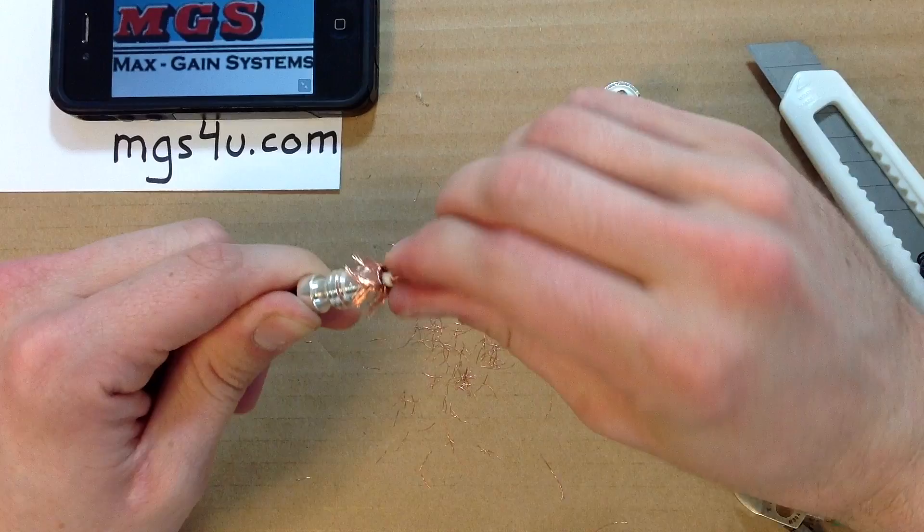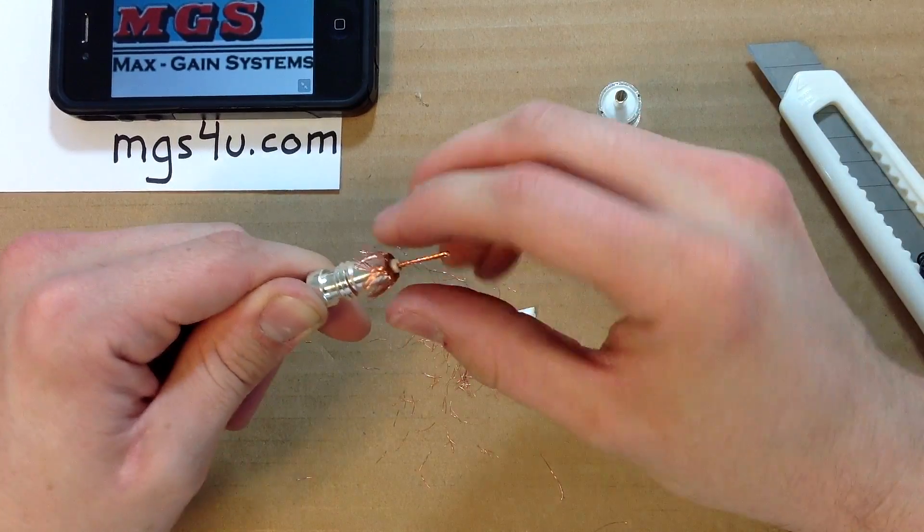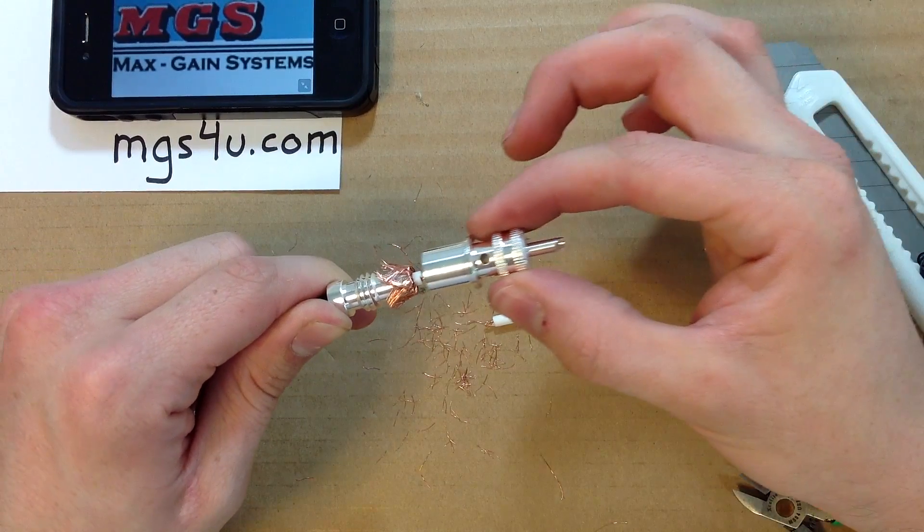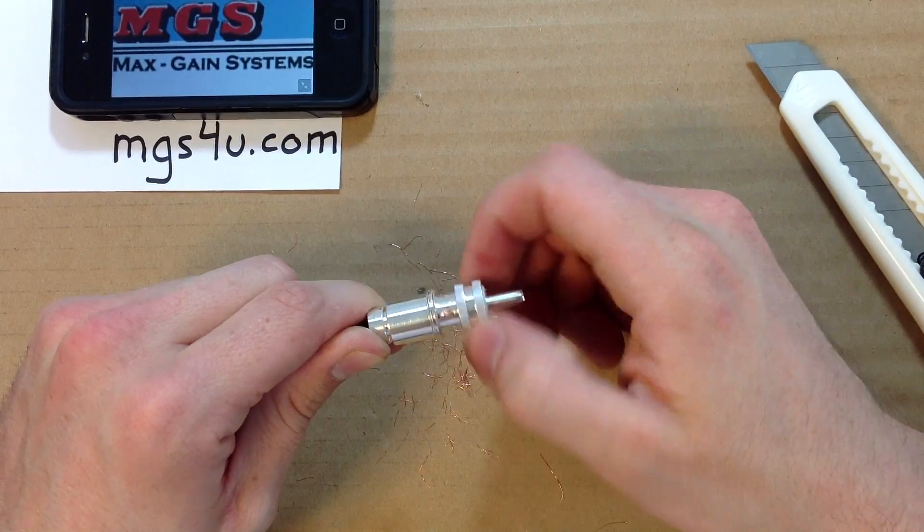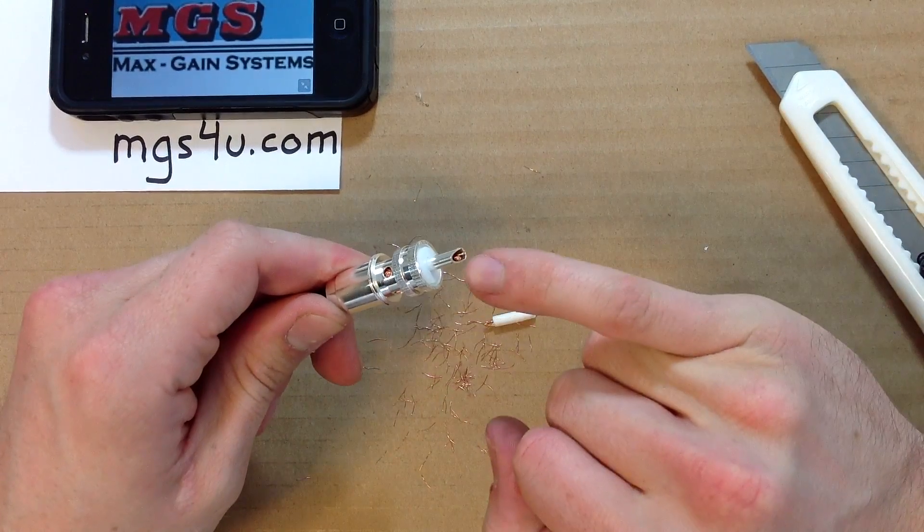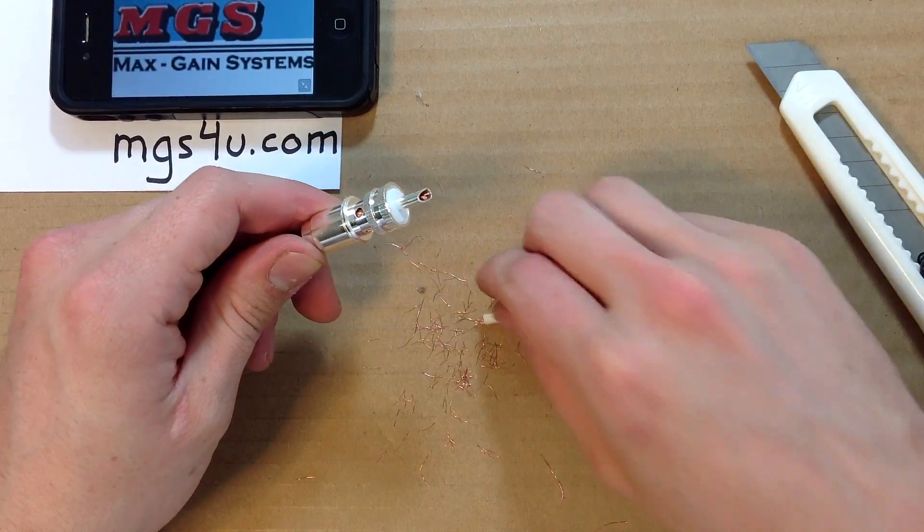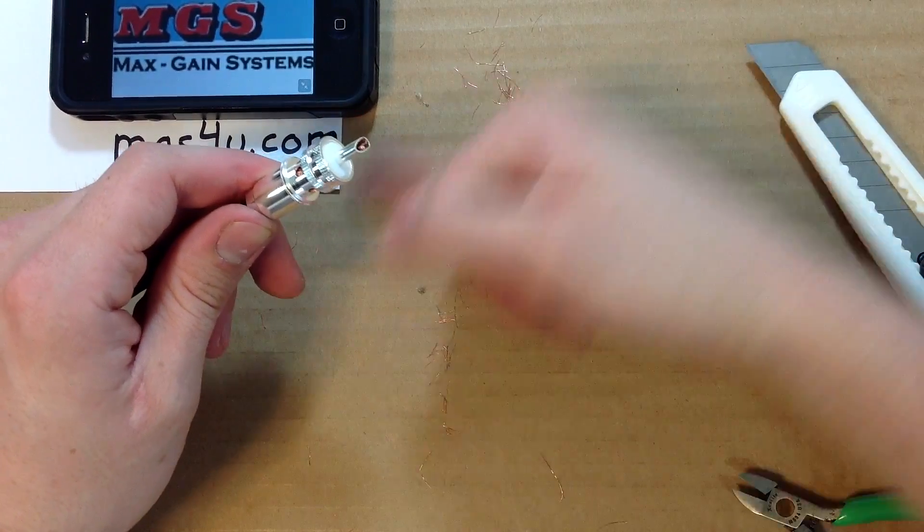Grab your PL259 inner body and twist it to the right or clockwise onto the reducer and cable. You should see the center conductor of the cable perfectly aligned with the end of the PL259 center pin. If there is any extra, just trim it off with your cutters.